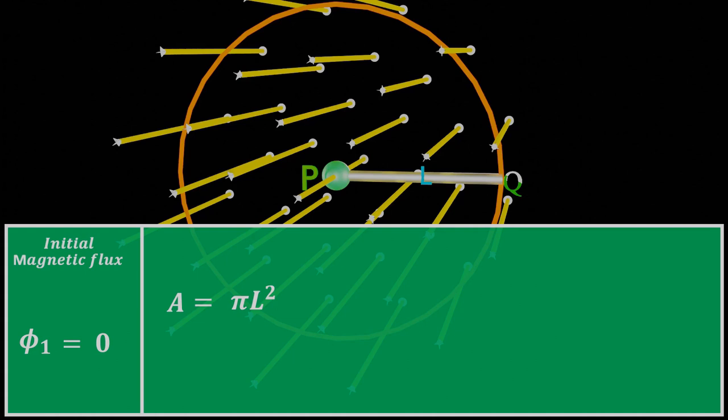Therefore, final magnetic flux φ₂ linked to a rod is equal to BA, where A is πL². So, the equation for the final magnetic flux linked to a rod during rotation will be BπL².